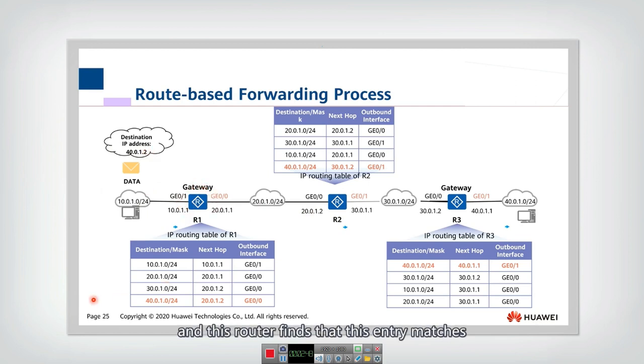This router finds that this entry matches, so it will forward through this interface, through interface zero, and then traverse the subnet and arrive at this router.